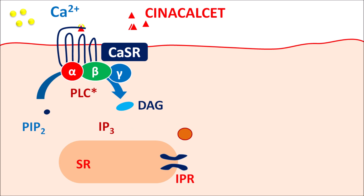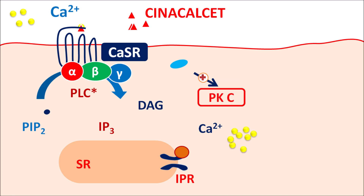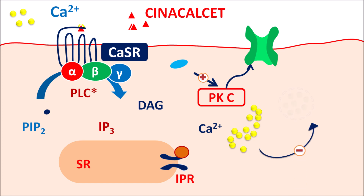IP3 can bind to the IP3 receptors, resulting in the release of intracellular calcium. DAG can interact with phospholipase, activating the key enzyme protein kinase C. Protein kinase C can then increase the expression of inward calcium channels, through which calcium enters the cytoplasm. In this way, the intracellular calcium levels are increased by the action of Cinacalcet. Quite opposite to many cells, raised calcium levels within the chief cells inhibit the release of parathyroid hormone, resulting in decreased PTH levels, thereby improving the symptoms of hyperparathyroidism.